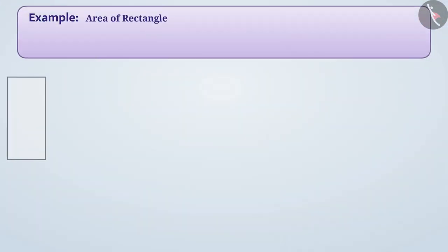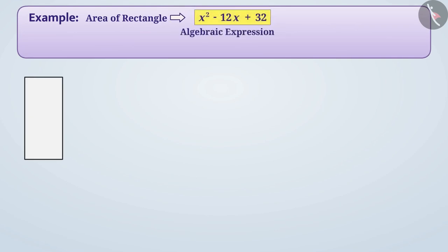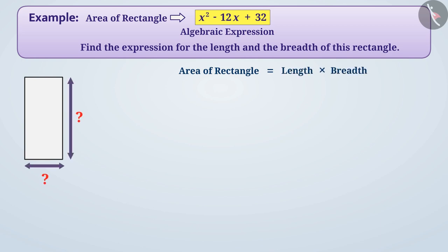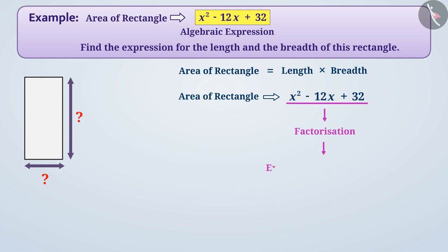The area of a rectangle is given as an algebraic expression. Find the expression for the length and breadth of this rectangle. We know that the area of a rectangle is length multiplied by breadth. Here the area is given as the algebraic expression x² - 12x + 32. If we factorize it, we will get an expression for the length and breadth of the rectangle. So let's get started.